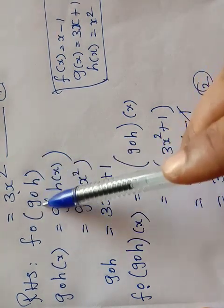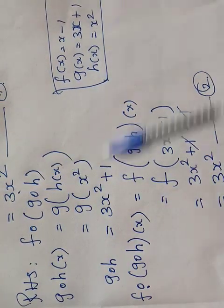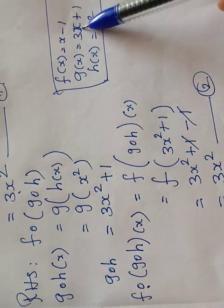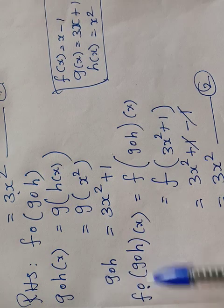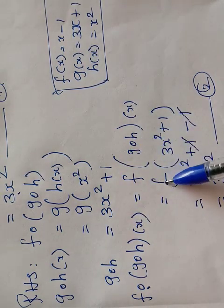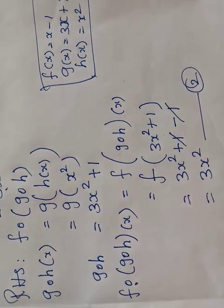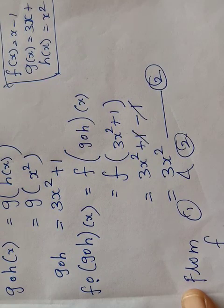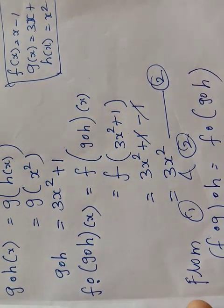Confirming the right-hand side: g composite h of x equals g of h of x, h of x is x squared, substituting into g gives 3x squared plus 1. Then f of (g composite h) of x: substitute 3x squared plus 1 into f (which is x minus 1), giving 3x squared plus 1 minus 1, plus 1 and minus 1 cancel, giving 3x squared. From left-hand side and right-hand side both equal 3x squared, therefore f composite g composite h equals f composite (g composite h), proving associativity.